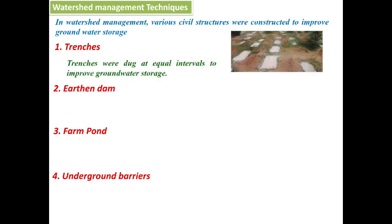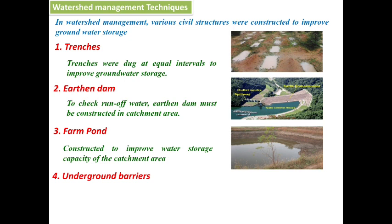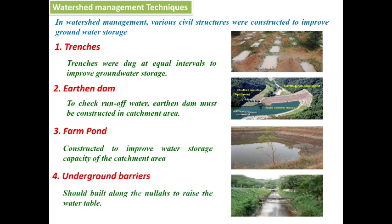Watershed management techniques include four methods. First, trenches: we dig the land surface at equal intervals so that during rainfall water gets deposited in those intervals, improving groundwater storage. In the national 100-day working scheme under Mahatma Gandhi Employment Scheme, people in local villages make trenches to increase water storage capacity. Second, earthen dams: civil structures are constructed in catchment areas to check runoff water and store more water. Third, farm ponds: constructed to improve water storage capacity of the catchment area.